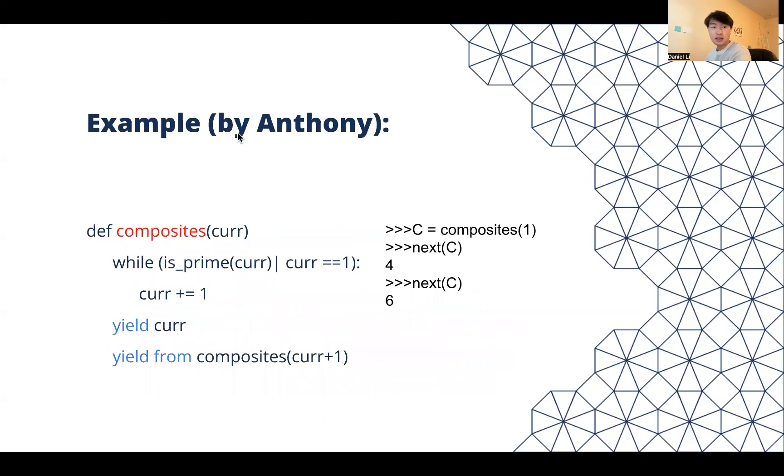This is an example created by my friend Anthony. Here we have a generator function called composites. This generator function takes the curr value and tests if it's a composite number. The first thing it checks is whether it's prime or equal to one. If it's either of those, it keeps incrementing by one until it becomes a composite number.